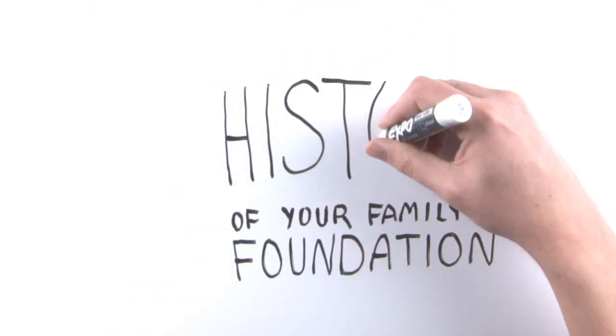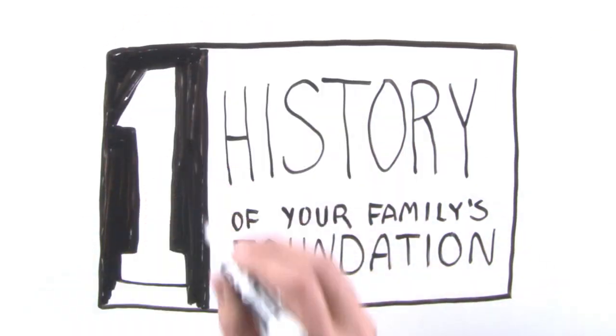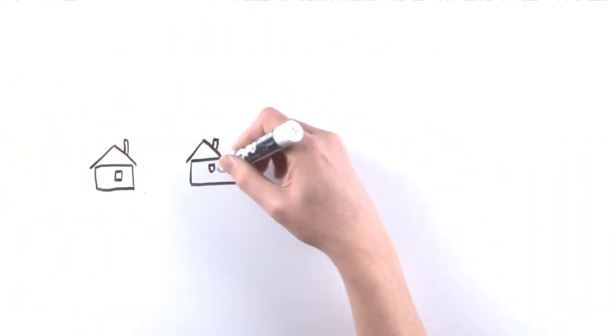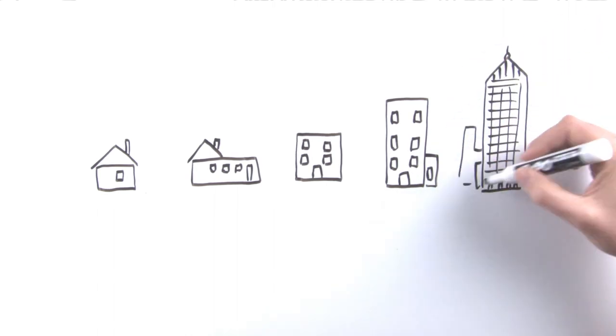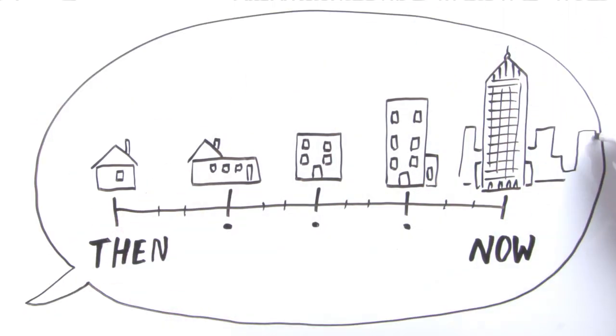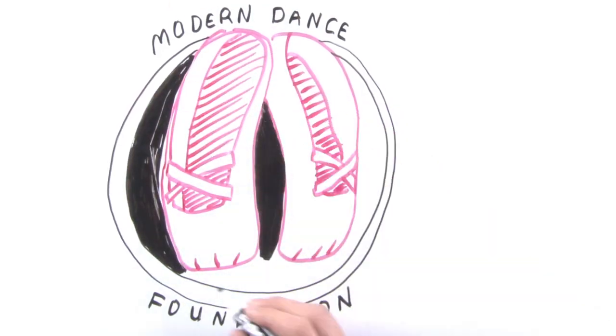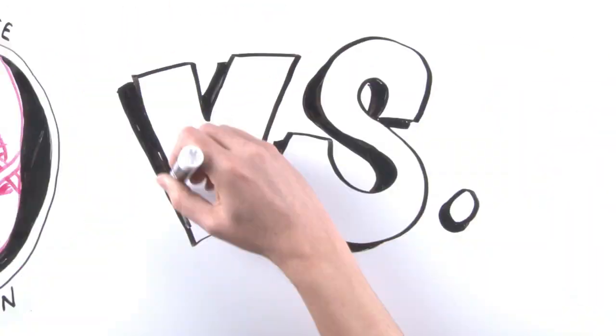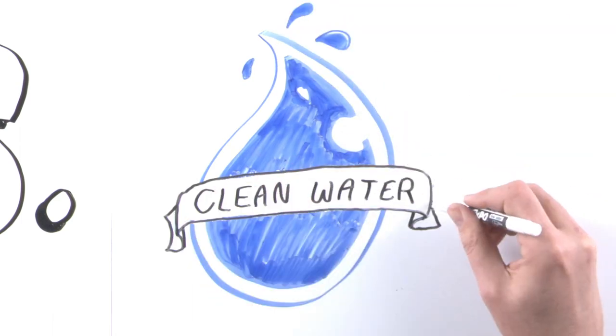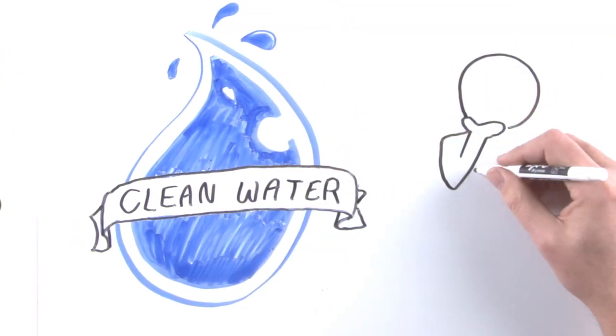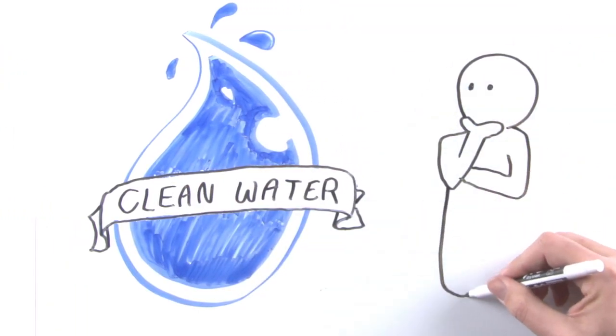Question number one. Do you know the history of your family's foundation? Have you talked with current or former board members about how the foundation has evolved over time? If the vision of your Family Foundation is to change the world through modern dance, and your passion is clean water, well then you may need to think about whether your Family Foundation is the place to make your impact on the world.